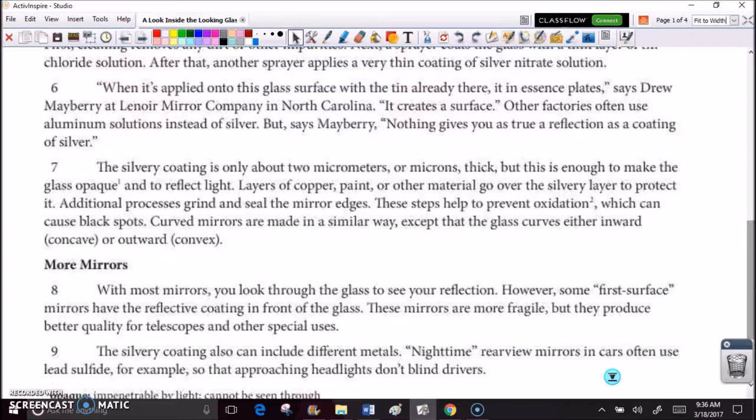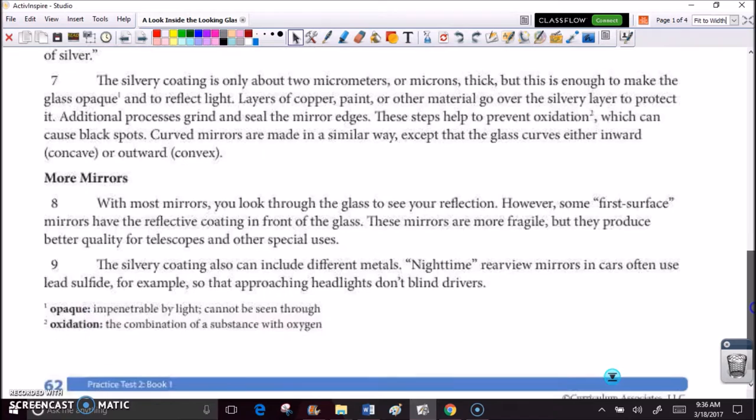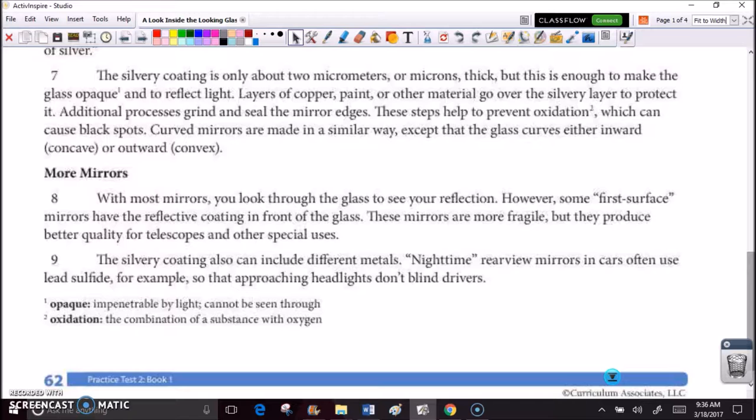The silvery coating is only about two micrometers or microns thick, but this is enough to make the glass opaque and to reflect light. Layers of copper, paint, or other material go over the silvery layer to protect it. Additional processes grind and seal the mirror edges. These steps help to prevent oxidation, which can cause black spots. Curved mirrors are made in a similar way, except that the glass curves either inward, concave, or outward, convex.